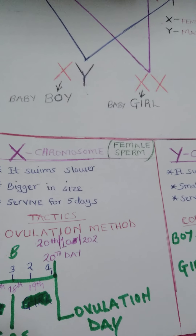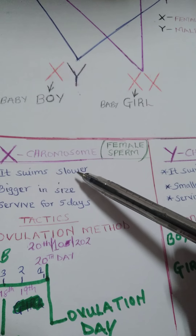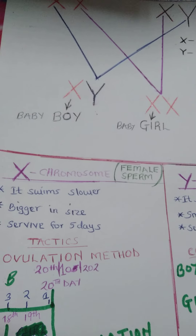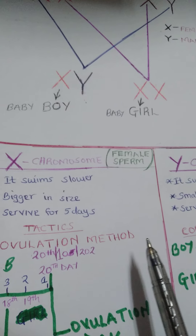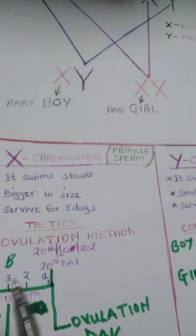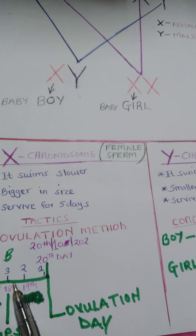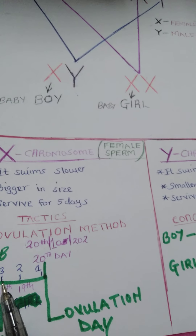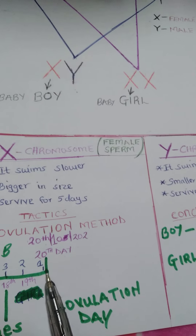There's a possibility of getting a baby boy this way. The X female sperm swims slower as compared to the Y sperm, which swims faster. So if you have sexual intercourse 3 days before your menstrual period, the Y sperm is still alive. The moment you release your egg, the Y chromosome will move at high speed to get fertilized with the egg.